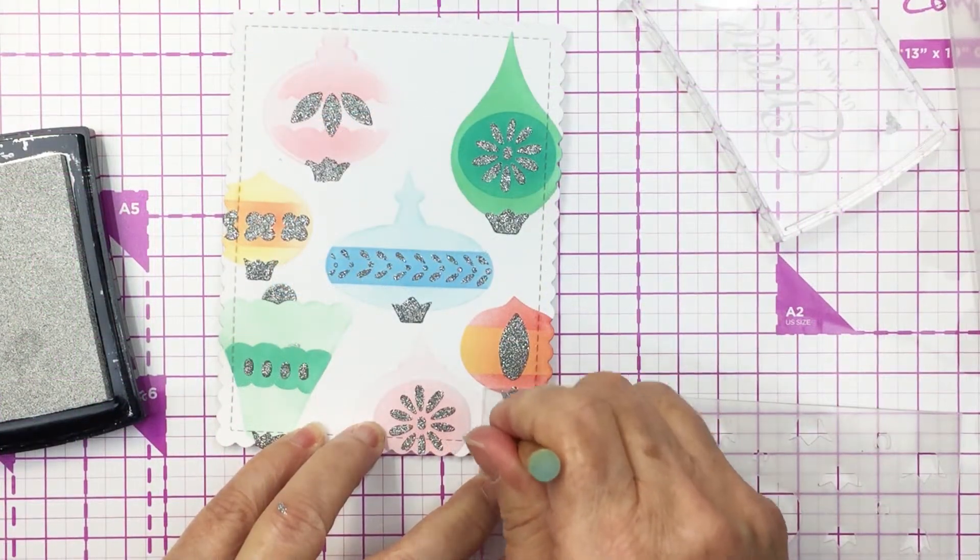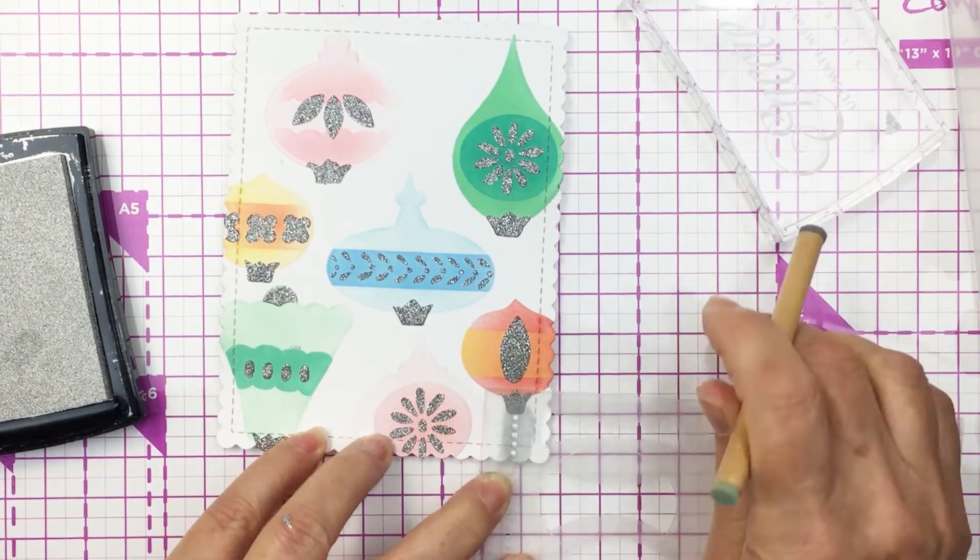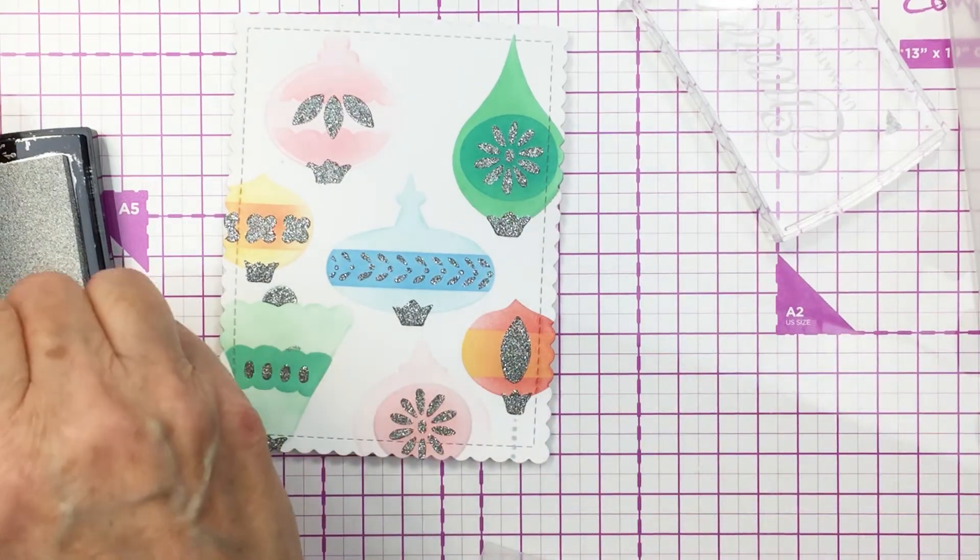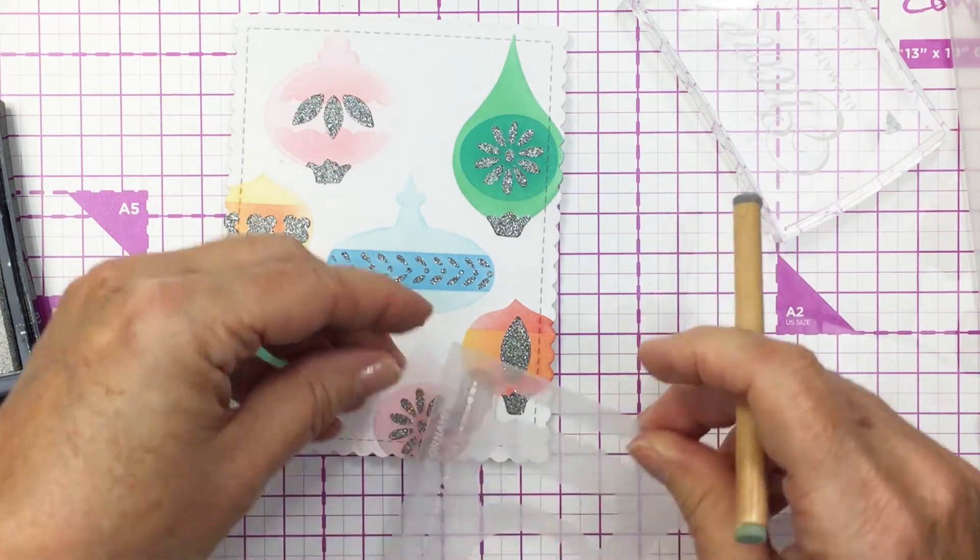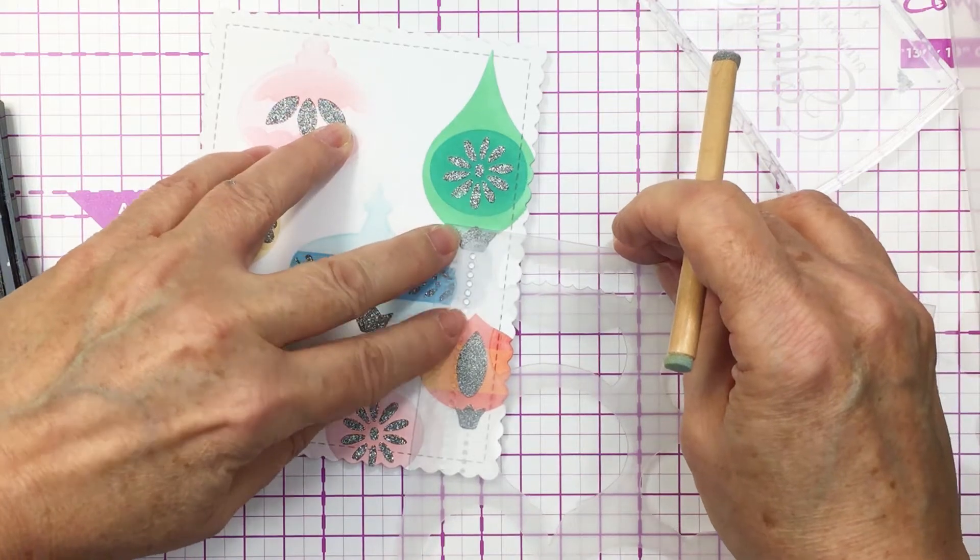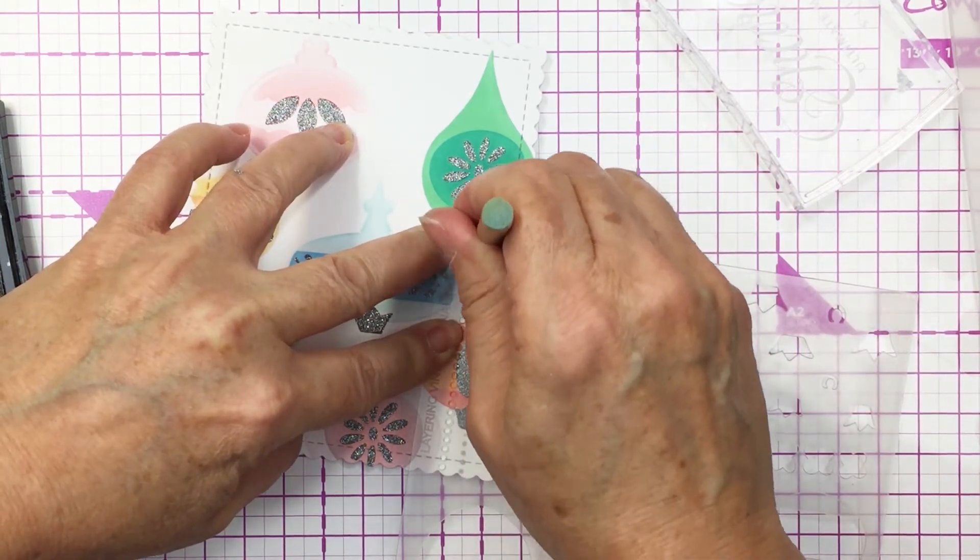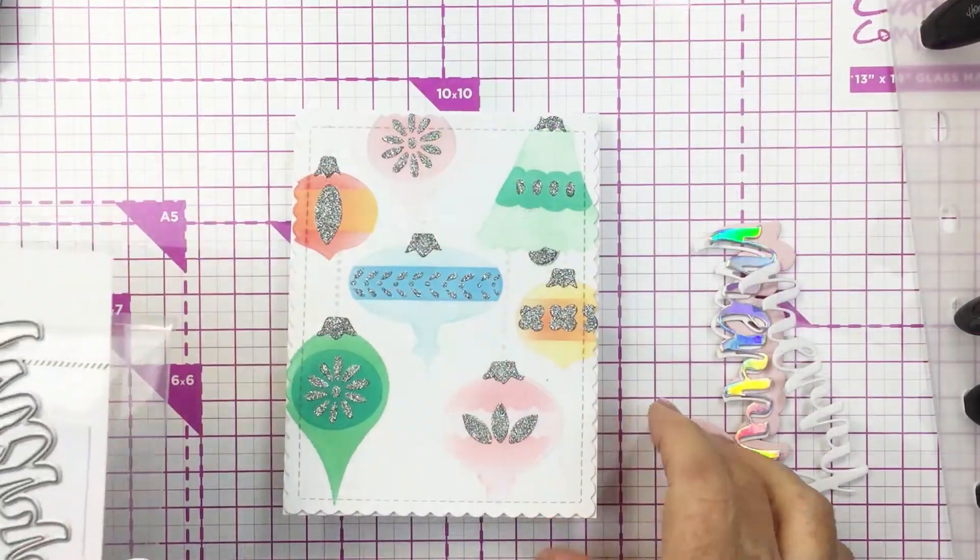Now what I'm doing here is I'm using a really shiny silver pigment ink to use through that stencil where the impression is of the string that ornaments are hanging from. I'm just going to apply that silver ink to each one of the different ornaments just to have that impression of that string.